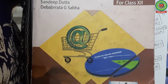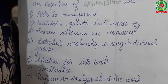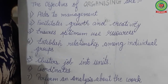Good morning everyone. Today we are back for your commerce class on chapter number 9, Organizing. We will discuss delegation of authority, its attributes, and the concept of centralization and decentralization. The learning objectives include: aids to management, facilitates growth and creativity, ensures optimum use of resources, establishes relationships among individuals, clusters jobs into units, and coordinates different activities.